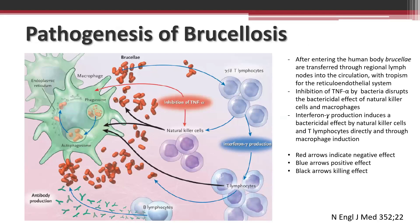Regarding pathogenesis: after entering the human body, bacteria are transferred to the regional lymph nodes into circulation, and they have tropism for the reticuloendothelial system. They inhibit TNF-alpha, which disrupts bactericidal activity. However, interferon-gamma induces bactericidal activity by natural killer cells — that is the body's protective mechanism.